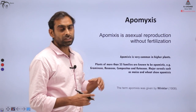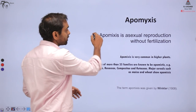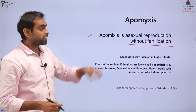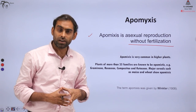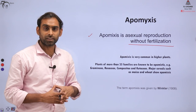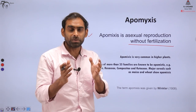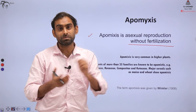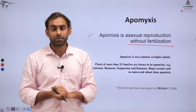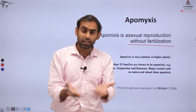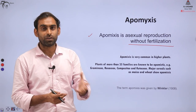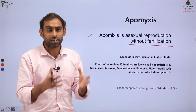First let us talk about Apomyxis. Apomyxis is asexual reproduction without fertilization. If there is seed or fruit formation in plants without fertilization, we call it Apomyxis. Sometimes you see that when you take a papaya, there are no seeds in it — so the fruit is formed without fertilization maturing the flower through a vegetative reproduction process. In some cases it can also make seeds.